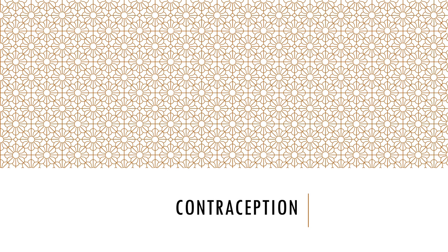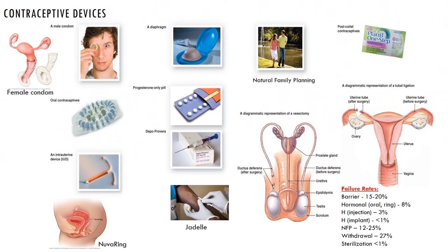There are many contraceptive devices that can be used to prevent fertilization. Various contraceptive devices are shown here, including a male condom, female condom, diaphragm, natural family planning, Depo-Provera, IUDs, and oral contraceptive devices such as the birth control pill. Each of these devices has noted success or failure rates. The only contraceptive device that is 100% effective is abstinence or a complete hysterectomy. Even a vasectomy in a male has a certain failure rate.